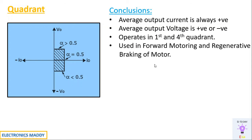If you want to use the circuit for first and second quadrant operation, you go for a Type C chopper. If you want first and fourth quadrant operation, you go for a Type D chopper — it depends on what mode of operation you need. I hope you were able to understand and analyze the working and waveforms of a Type D chopper. If you have any questions, feel free to ask in the comments below. Please like, share, and subscribe to our channel for regular updates. Thanks for watching!